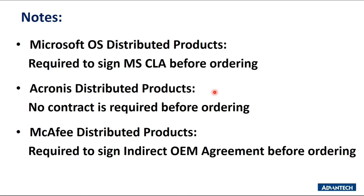For Acronix distributed products, no contract is required. When you purchase the McAfee distributed product, a contract similar to the Microsoft CLA — called an indirect OEM agreement — is required before ordering. We will require some information from the customer, such as full company name, address, contact person, job title, email, and so on. Advantag will forward this information to McAfee to draft the indirect OEM agreement. This agreement is perpetual — it does not have an expiry date and is tied to the company name.